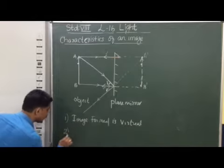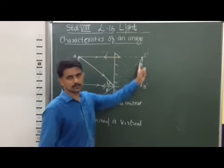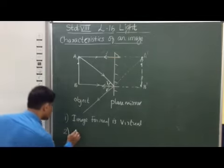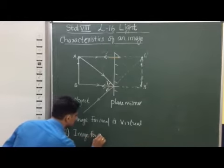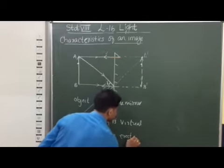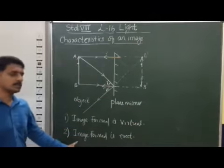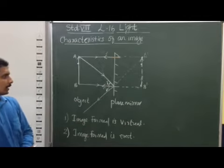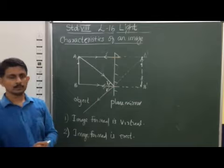The second property is that the image is erect. It is in the same state as the object — straight and upright, just as the image of an object would appear.